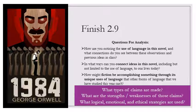In so far as the war has a direct economic purpose, it is a war for labor power. Between the frontiers of the superstates there lies a rough quadrilateral with its corners at Tangier, Brazzaville, Darwin, and Hong Kong containing within about a fifth of the population of the earth. It is for the possession of these thickly populated regions that the three powers are constantly struggling.